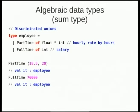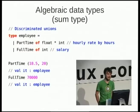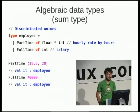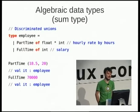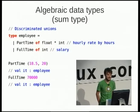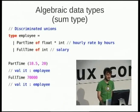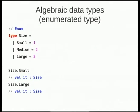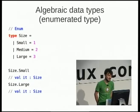Discriminated unions are a way of making a single type hierarchy. In object-oriented programming you'd make an abstract class Employee with concrete classes PartTime and FullTime derived from it. With F-sharp discriminated unions, you can just say that PartTime is a float and an int, FullTime is an int, and they're both Employee types. You can pass them around and pattern match on both. It's just a short way of creating a single hierarchy. We also have enums, which have to be fully qualified — Size.Small, Size.Large — but they work just as enums.